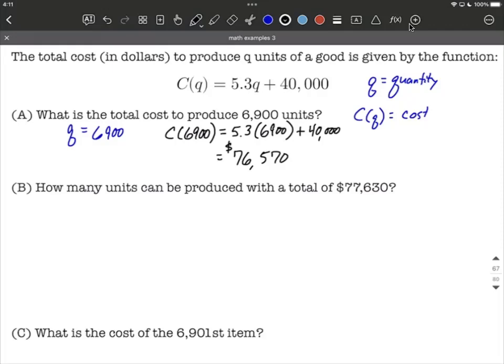In part B, we want to know how many units can be produced for a total of $77,630. That is a total cost in dollars, so that's a value for C of Q, which is 77,630. We're going to replace that into the left-hand side of our function, so it's going to be 77,630 equals 5.3Q plus 40,000. We're going to get rid of the left-hand side and do a little bit of work to isolate Q on one side all by itself.